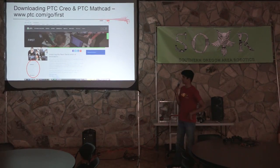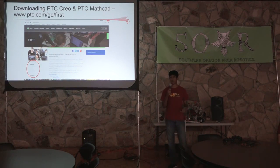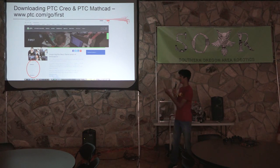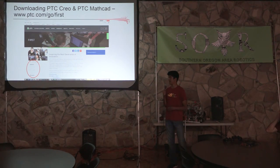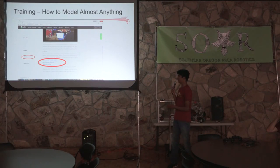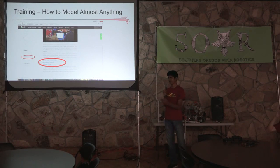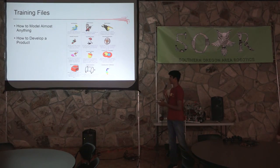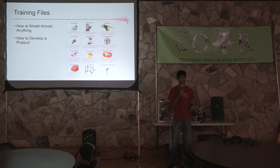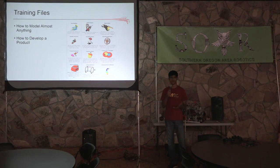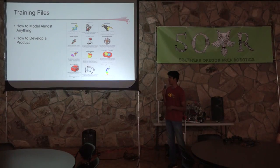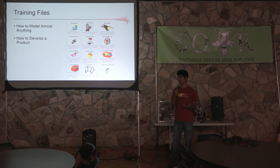Here's a website you can go to to download the software. It's free for FTC teams — you just have to go to ptc.com/go/first. On this website there's also a training file called 'How to Model Almost Anything,' which is really useful. It has a lot of tutorials and exercises that will get you familiar with the software, let you model several different parts, and show you some basic analysis. Once you go through this tutorial, you'll be ready to model a robot.